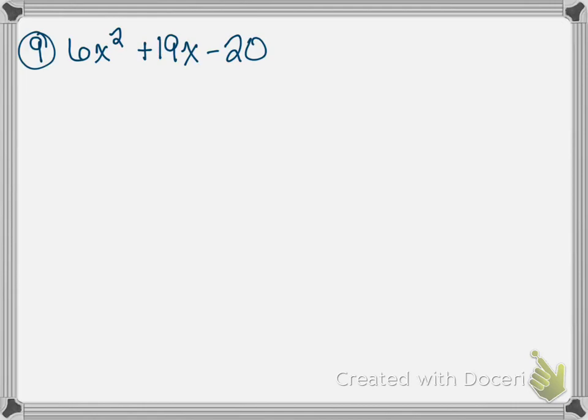We are doing factoring. The first problem is 6x squared plus 19x minus 20. The first thing we ask ourselves is: is there a GCF we can pull out? I look for whether coefficients are all odd/even, multiples of three, five, or ten. Nineteen is a prime number, so nothing comes out of all three terms — no GCF. It's a trinomial, so we can't factor by grouping; we'll use the sum and product method.